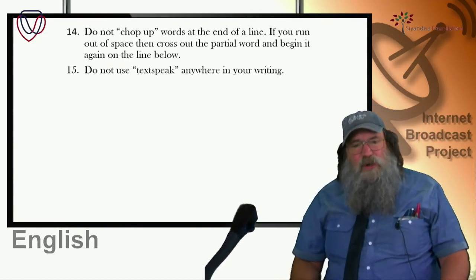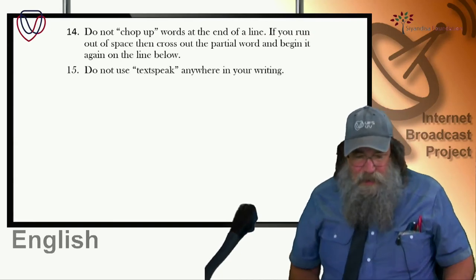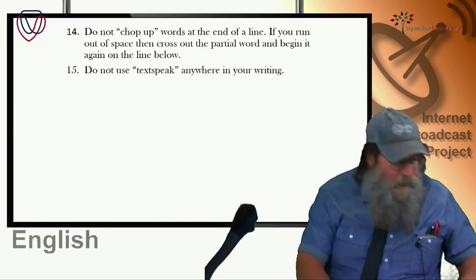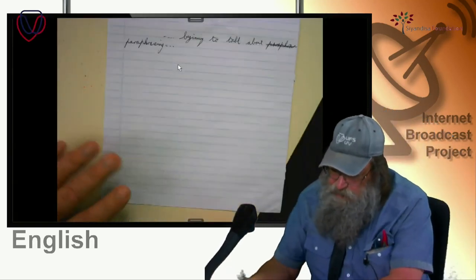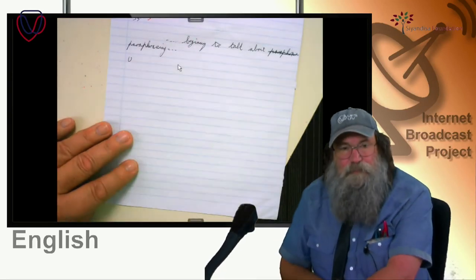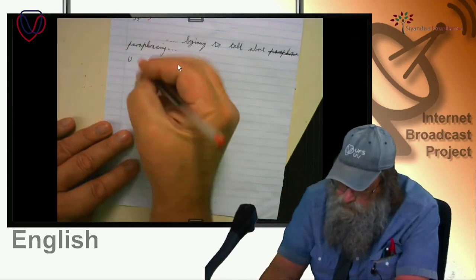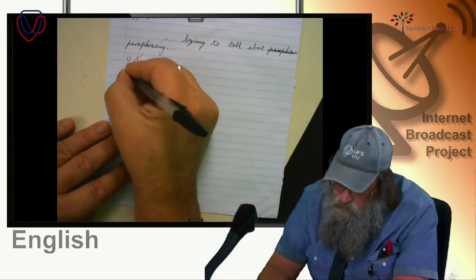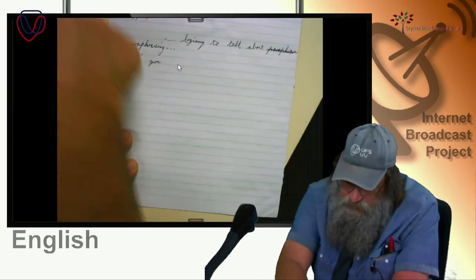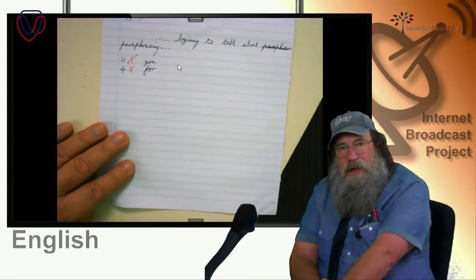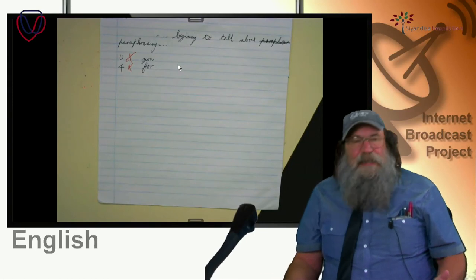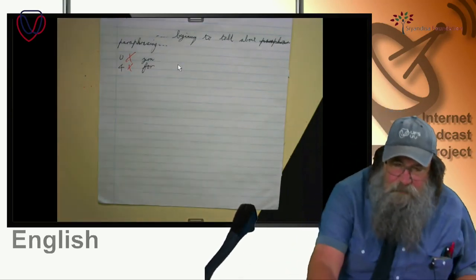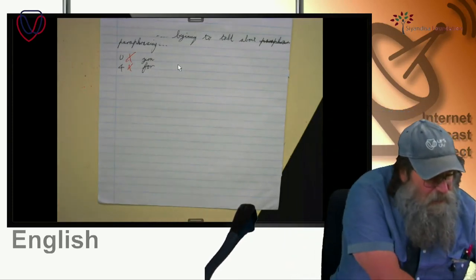Text speak: do not use text speak. For example, 'u' must be written as 'you', and '4' must be written as 'four'. Please don't get into the habit of using your text method of expressing yourself in your essay — it leads to terrible confusions and errors. Also: gonna should be 'going to', wanna should be 'want to', gotta should be 'got to'. Those aren't English words — you're not supposed to be using them.